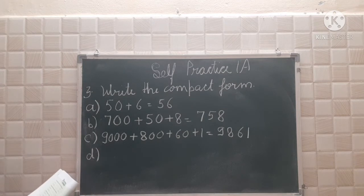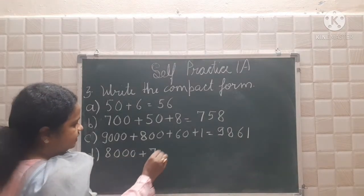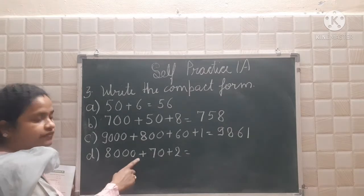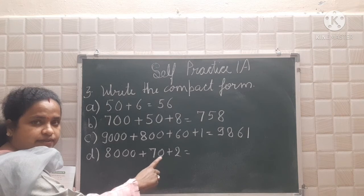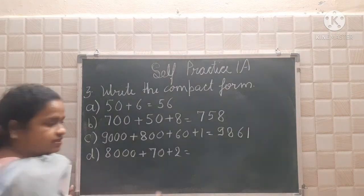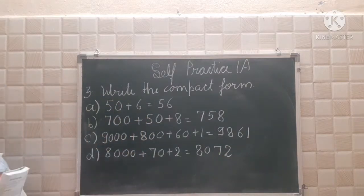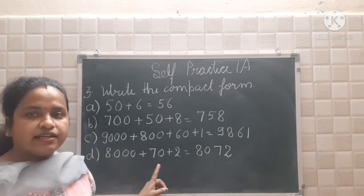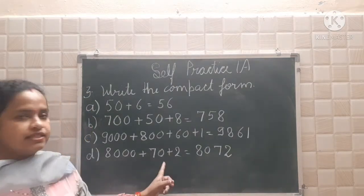See part D: 8000 plus 70 plus 2. Now 8 is at the thousands place. At the hundreds place, none of the digits are there — it means it will be 0. Then 7 is at the tens place and 2 is at the ones place. So what you will get is 8,072.